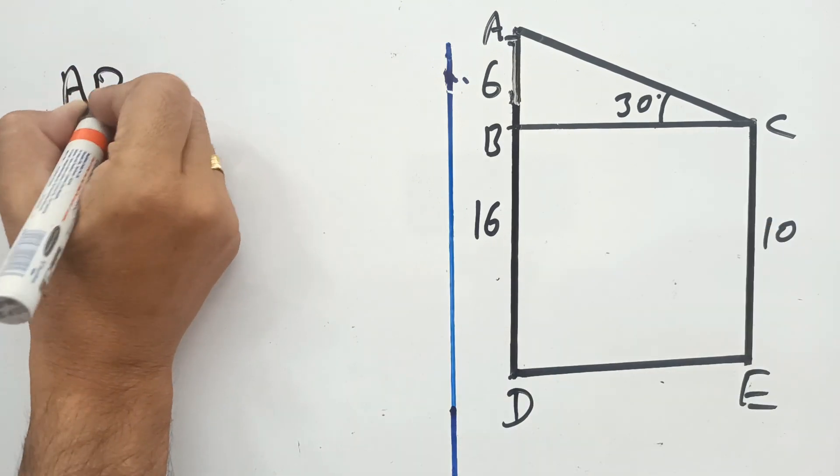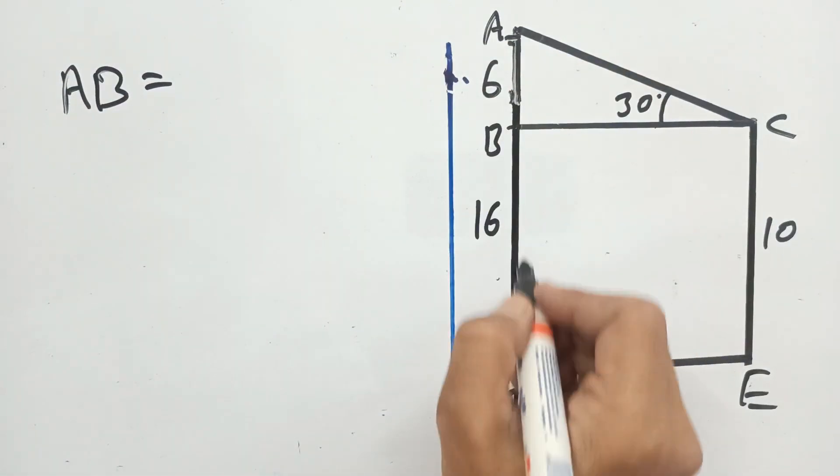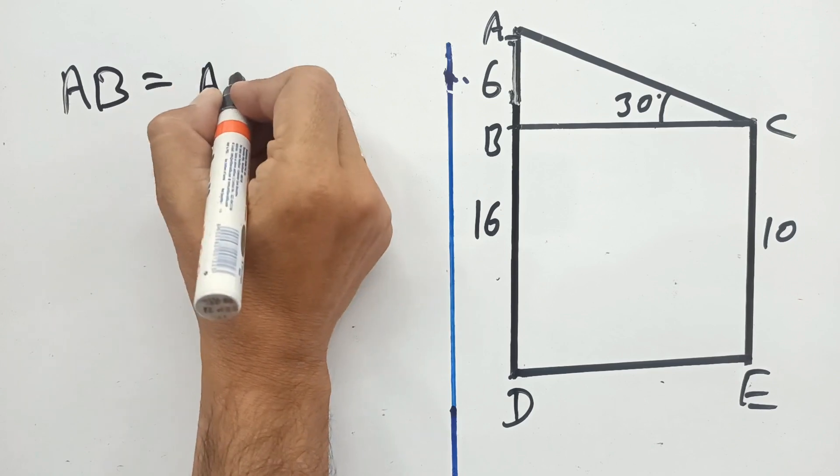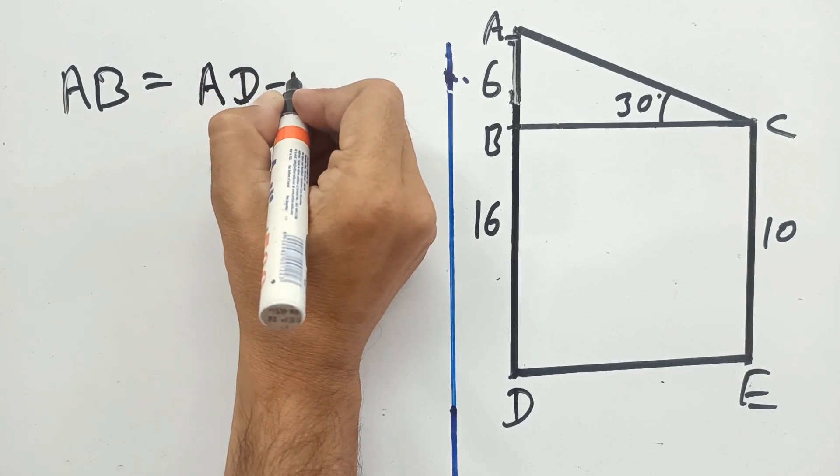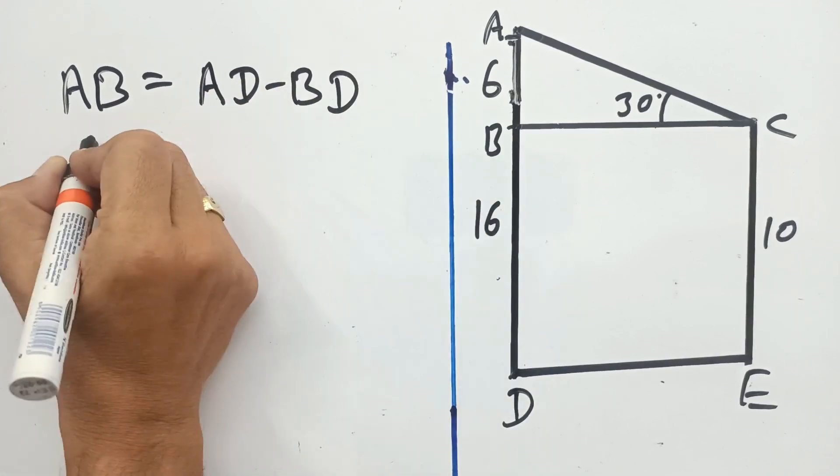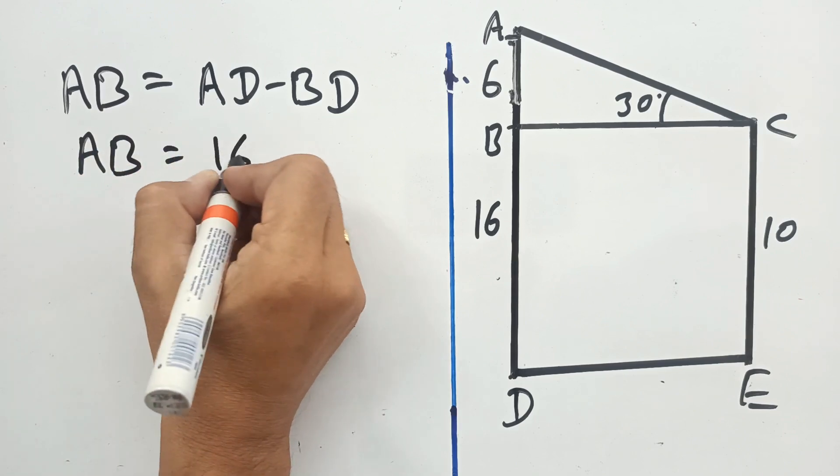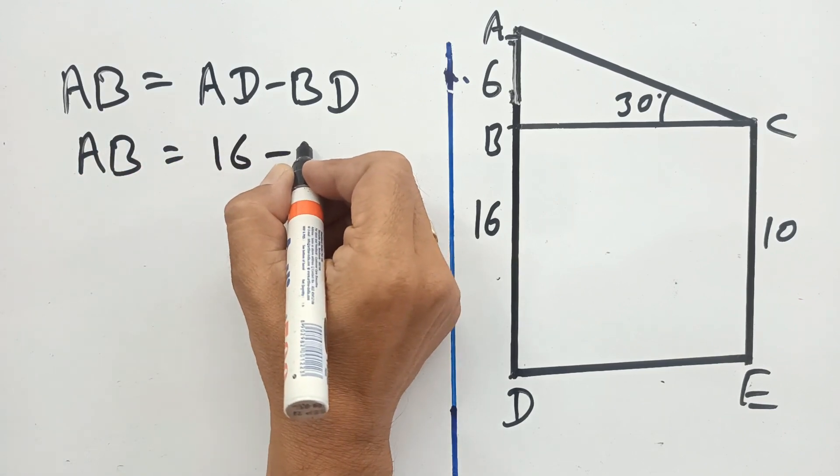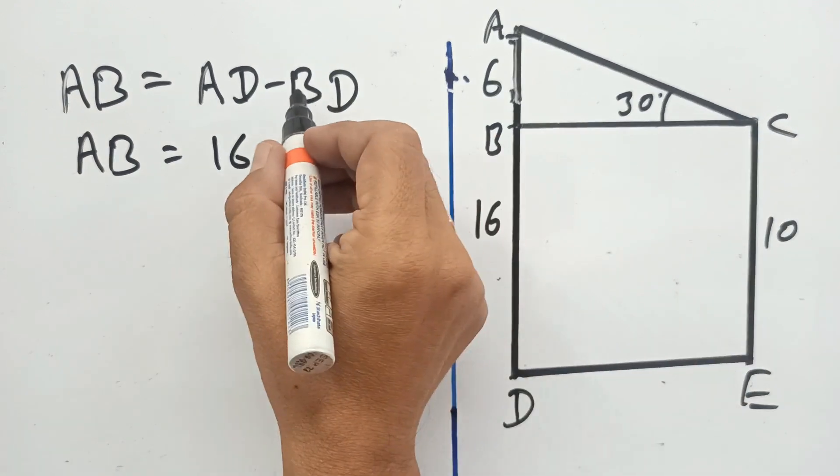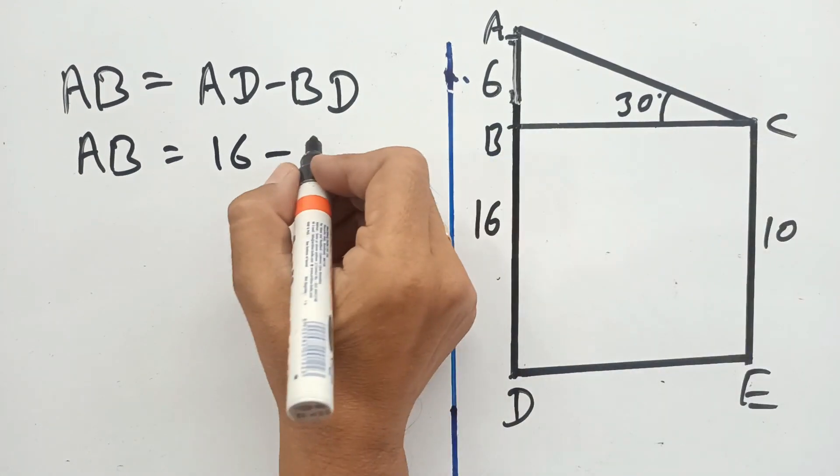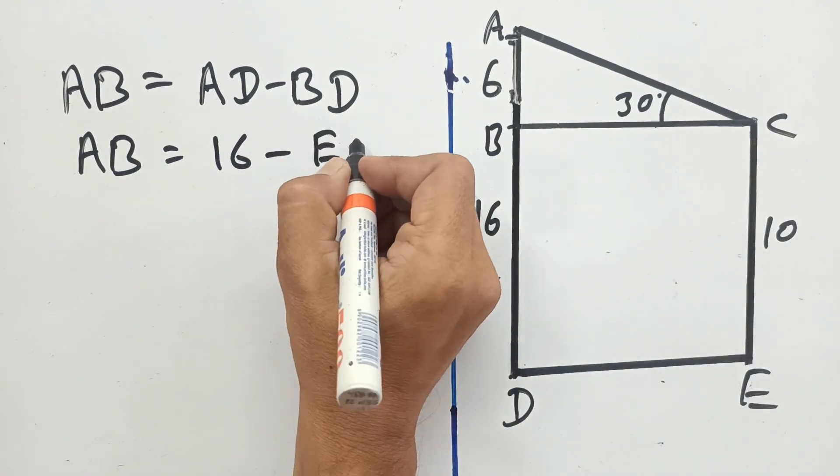So we can write AB is equal to AD minus BD, which is 16 minus BD. We can write EC because EC and BD are equal geometrically. AB is 6 meters.